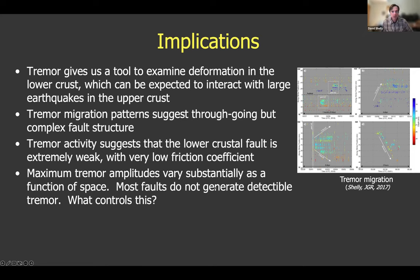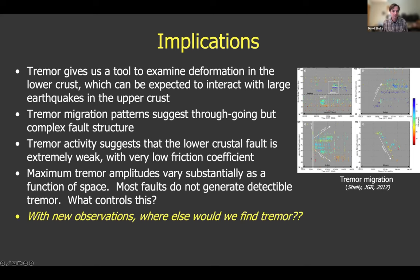Maximum tremor amplitudes vary substantially with space and we don't really understand what controls that. Activity seems to peter out as we get farther from Parkfield, but partly that's an observational effect. If we had new stations to the south of Parkfield, what else would we discover? We don't know until we put those stations in.